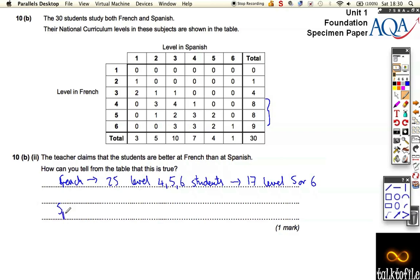If we look at Spanish, and we look down, there's 7, plus 4, plus 1, which is 11. There's only 12, level 4, 5, or 6 students. So, it's almost half, or less than half, actually. And if we just look at the top two levels, level 5 and 6 in Spanish, there's only 5, level 5 or 6. So, you can clearly see that when you compare the top levels, there's 17 French students who've got the top level, and only 5 Spanish students who've got the top level.